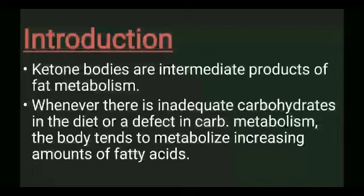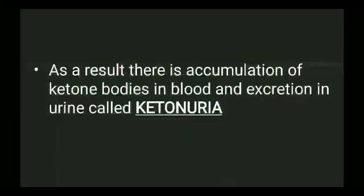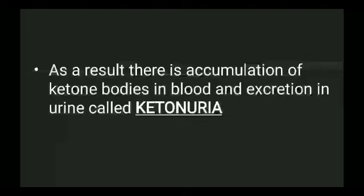As a result, there is an accumulation of ketone bodies in the blood, and then ketone bodies are excreted through urine. This condition is called ketonuria — when an abnormal amount of ketone bodies is present in urine. Normally, ketone bodies are present in urine only in negligible, undetectable amounts.